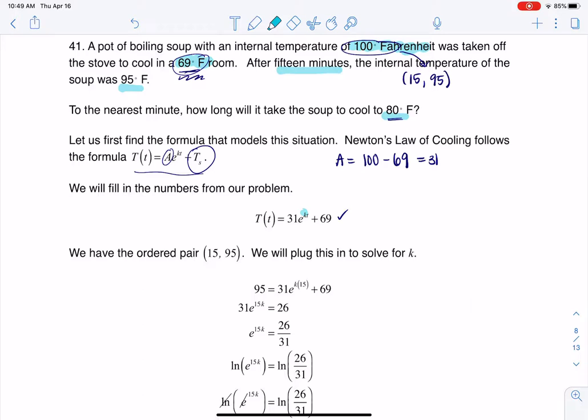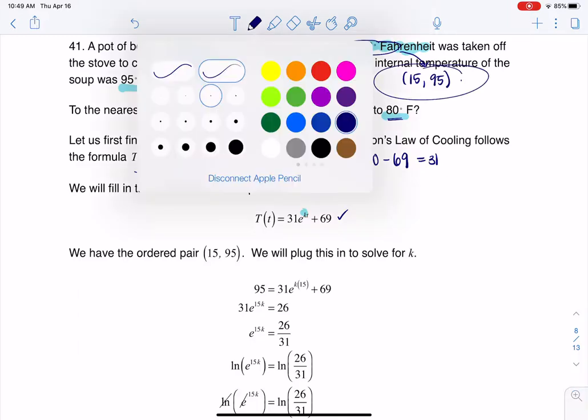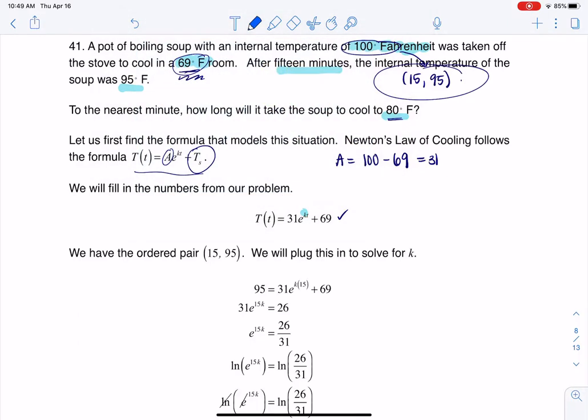So I need an ordered pair to make that happen and luckily I have one. We had 15 and 95, so let me change pen colors here. This is going to be an ordered pair for little t and then capital T.